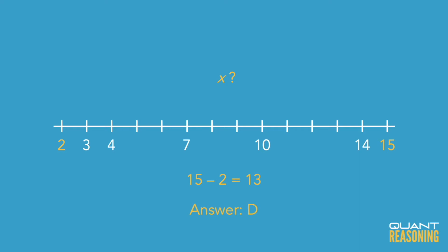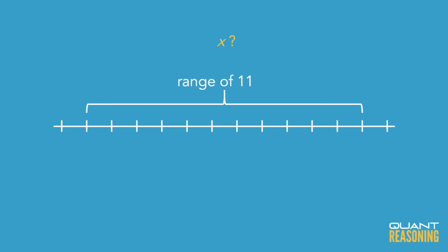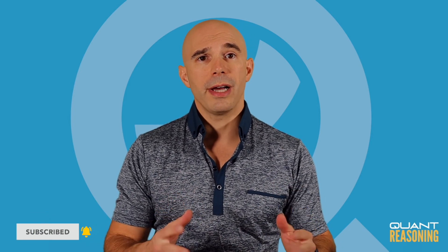Now they're asking us for the difference between those two possible values of x. We're looking at a range of 11, extended one to the left and extended one to the right — that would give you a range of 13. So without actually finding the possible values of x, we can see visually that the difference between those two possible values has to be 13, because we have a range of 11 and we add one on each side for a total of 13.